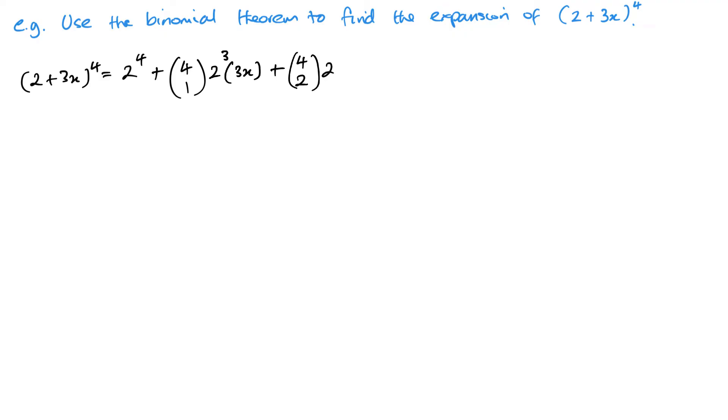And then we move on to the next one. So it's 4 choose 2, 2 to the power 2, 3x squared. Plus 4 choose 3, 2 to the power 1, 3x cubed. Plus, and then 4 choose 4, we don't bother doing it because it's just 1. So this is just going to be my final term to the power 4. And if you follow that, then this is going to become really easy.